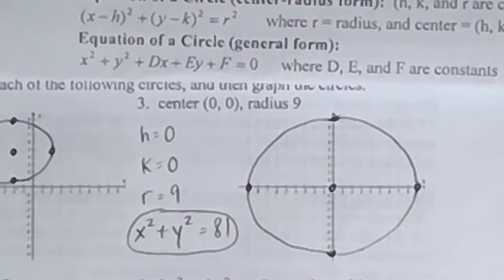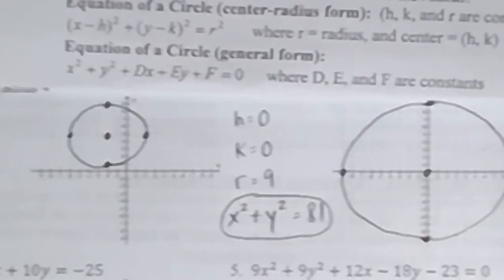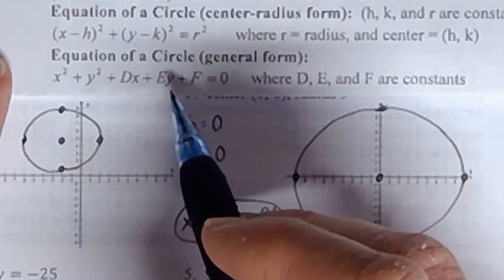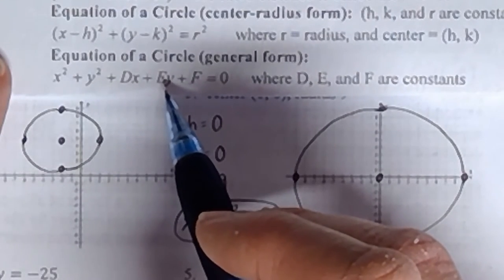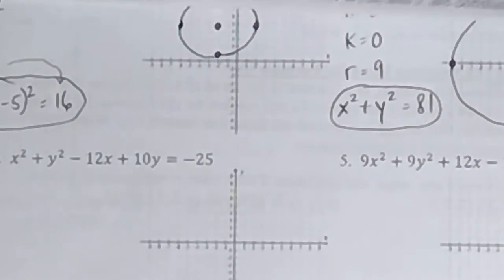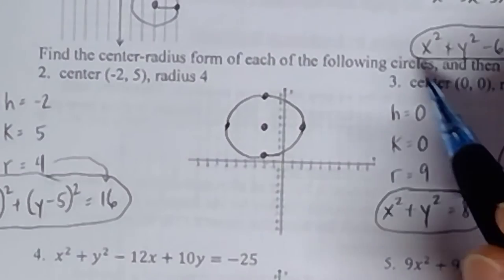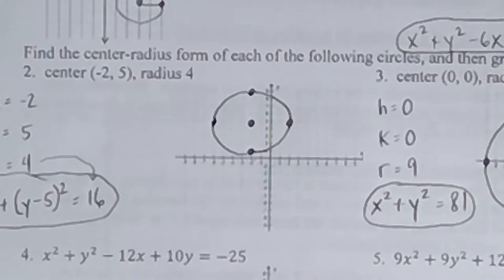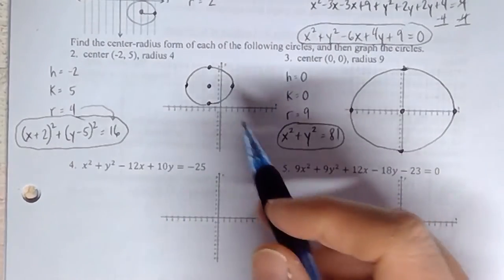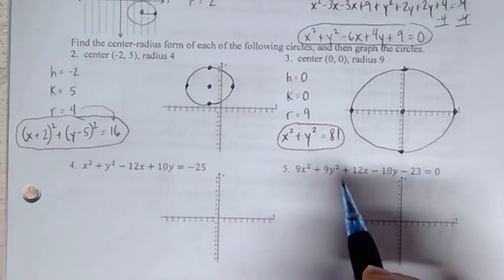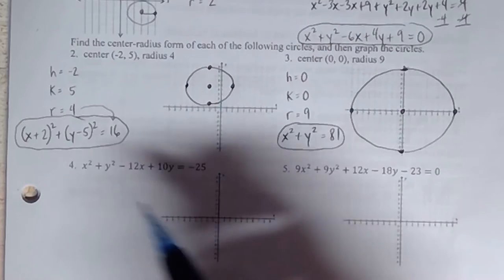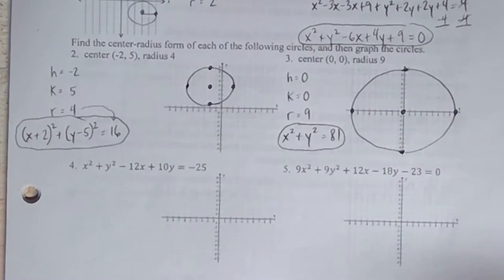A couple more problems in this section. As mentioned on the front of the worksheet, sometimes the equation of a circle looks like the general form. The next two problems give equations in that form, and the directions say: find the center-radius form of each circle. They're telling you these equations represent circles. We need to take these equations and make them look like the center-radius form with the two brackets.